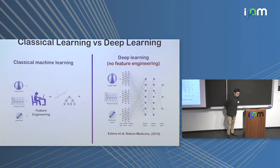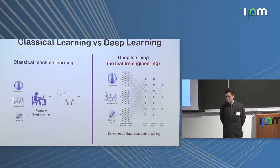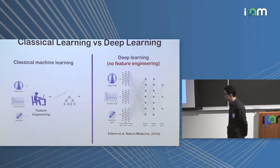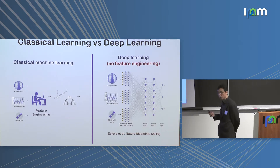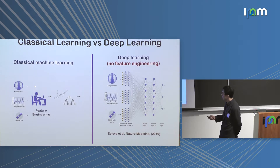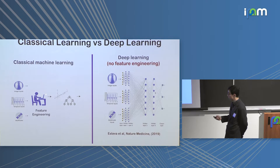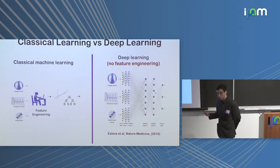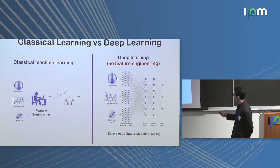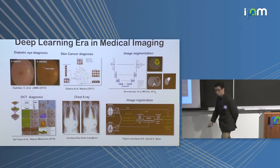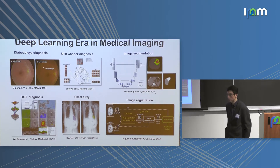Deep neural networks have a lot of advantages nowadays and are a main tool for the imaging community as well as many other communities. Compared to classical machine learning approaches, deep neural networks have a key advantage: in classical machine learning you need domain expertise to extract features to fit into simple classifiers, but in deep neural networks you can directly feed raw data and the network automatically finds the features and designs the classifier.